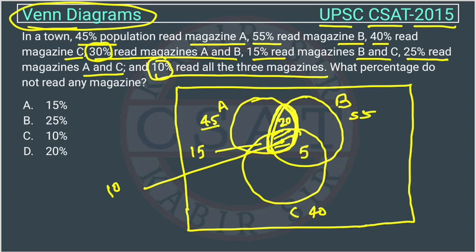The total reading magazine A is 45. Adding up the shared regions: 20 plus 10 plus 15 equals 45, so the only-A region is 0. For magazine B, the shared regions sum to 20 plus 10 plus 5 equals 35, so only-B is 55 minus 35 equals 20. For magazine C, 5 plus 10 plus 15 equals 30, so only-C is 40 minus 30 equals 10.